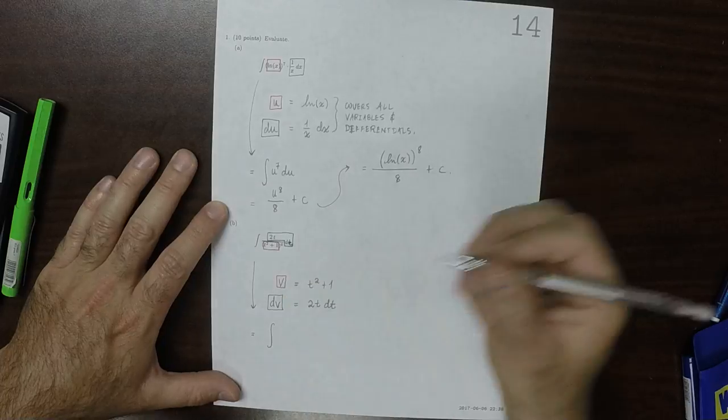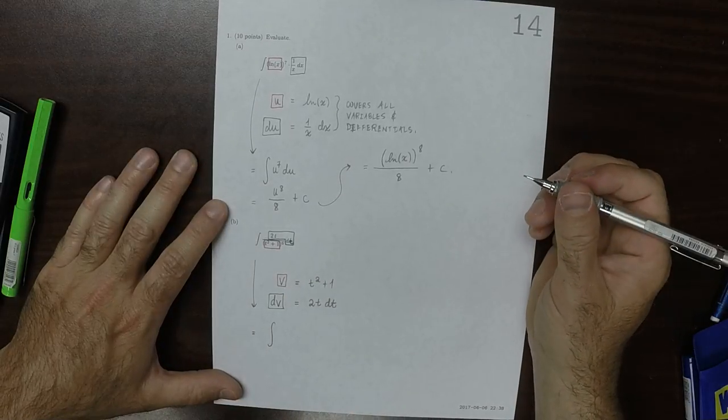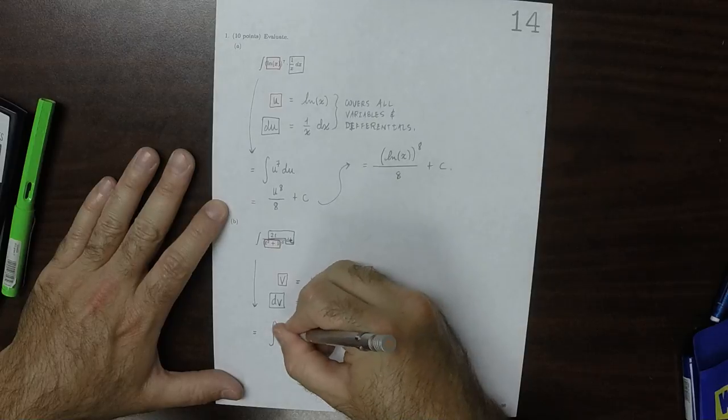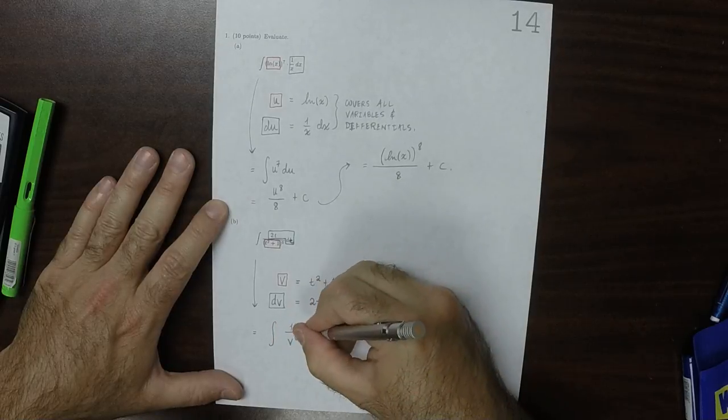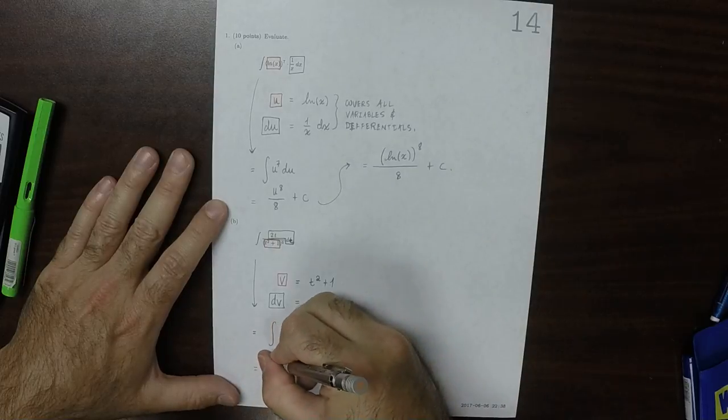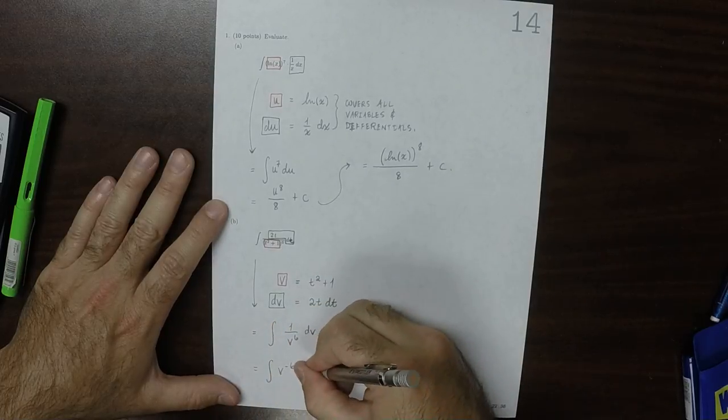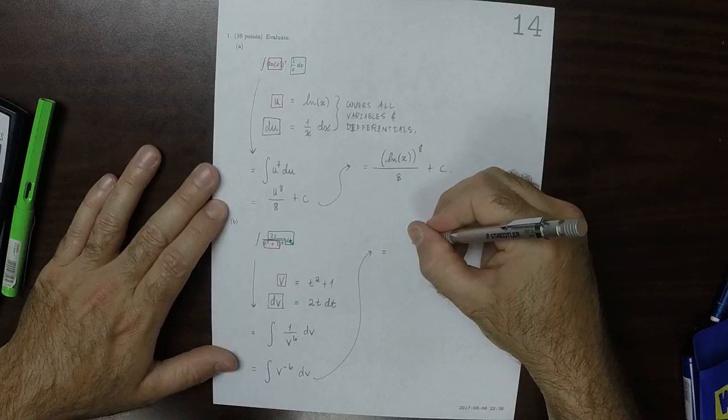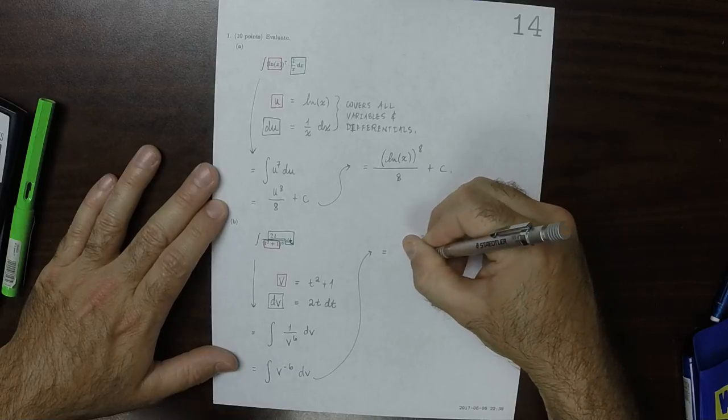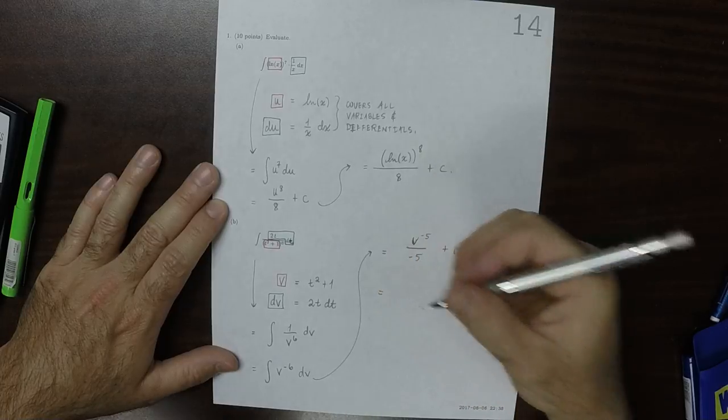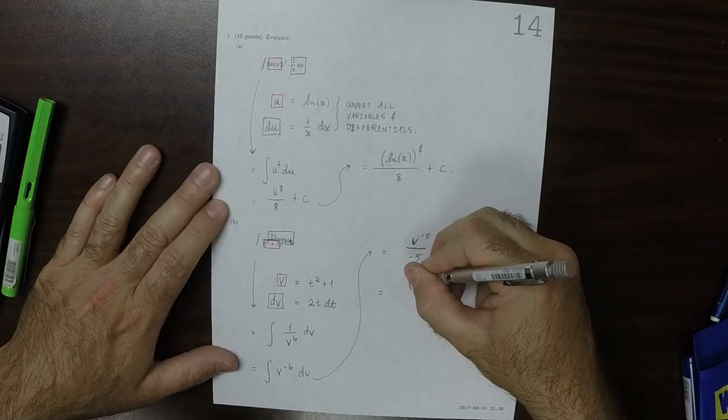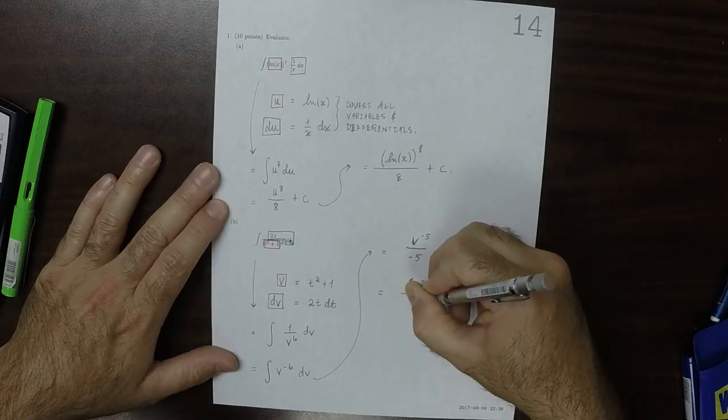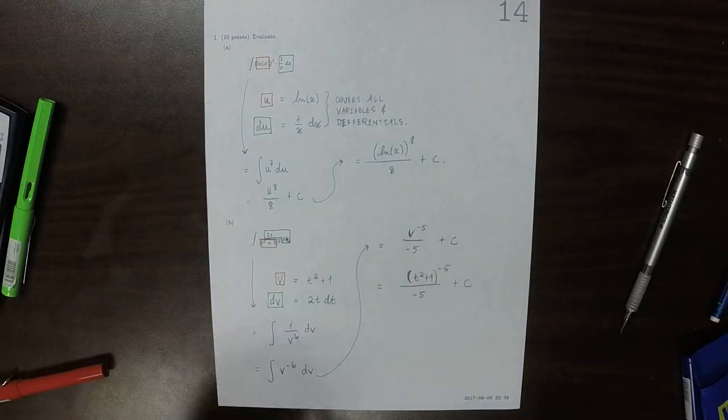So this would be antiderivative of what? So that would be 1 over v to 6 dv. Then we could rewrite that as antiderivative of v to negative 6 dv, which would be v to negative 5 over negative 5 plus a constant, which substituting back to t's would be t squared plus 1 to exponent negative 5, all of that divided by negative 5, and then plus a constant. And that's the answer.